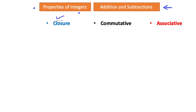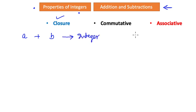Closure first. The closure law states that if you take two integers and add them together, it results in a number that is also an integer. Likewise, the same two integers — or any two integers in general — if you subtract one from the other, it will also result in a number that is an integer.